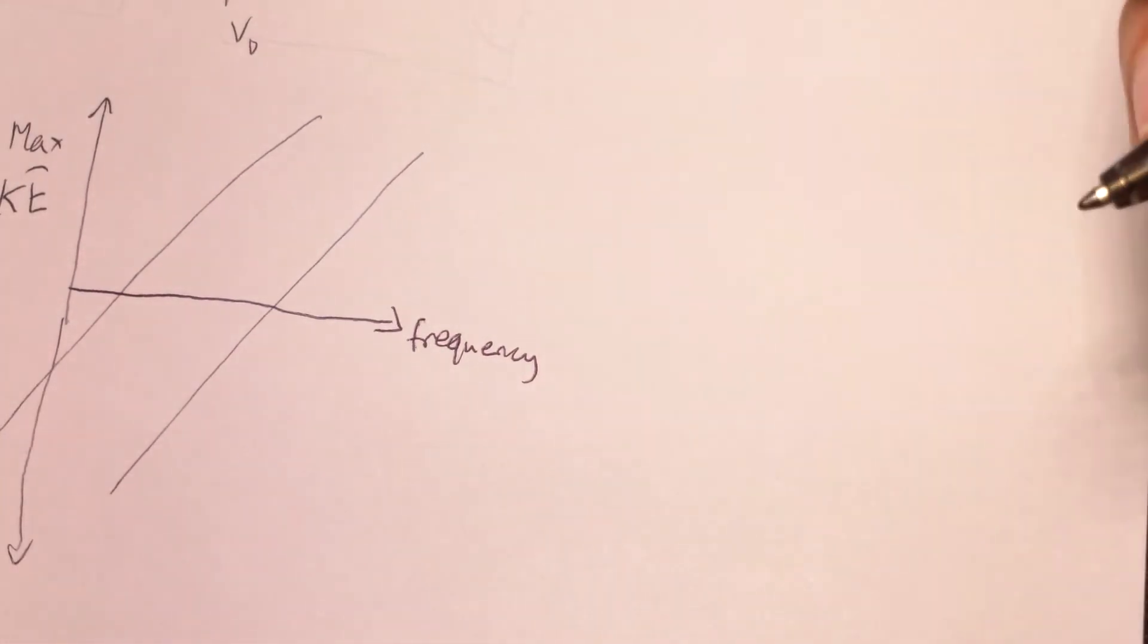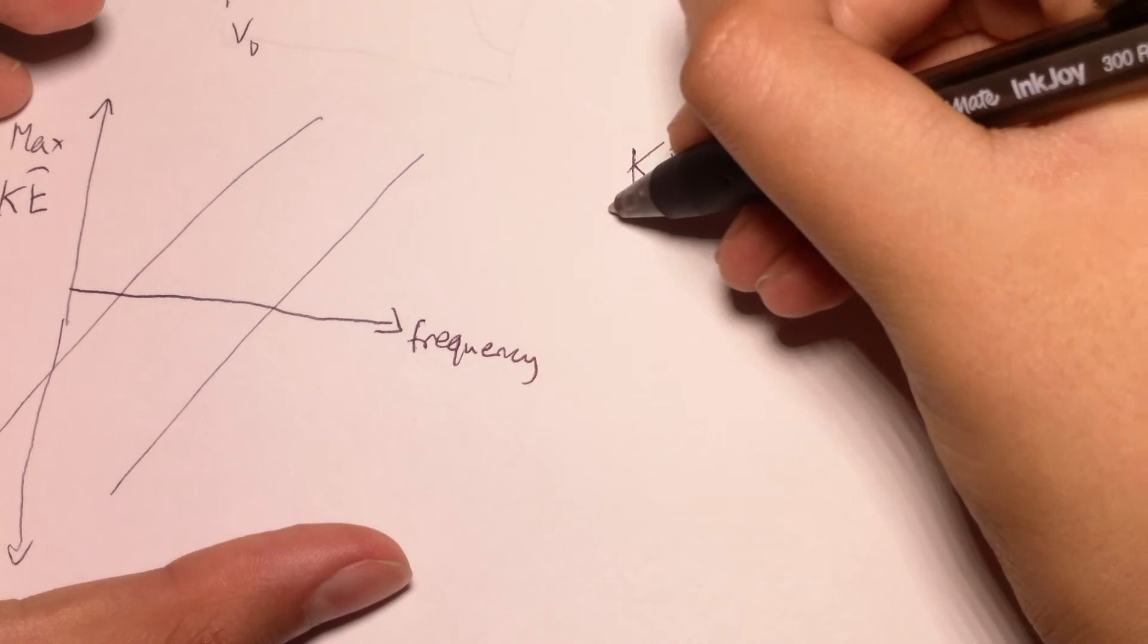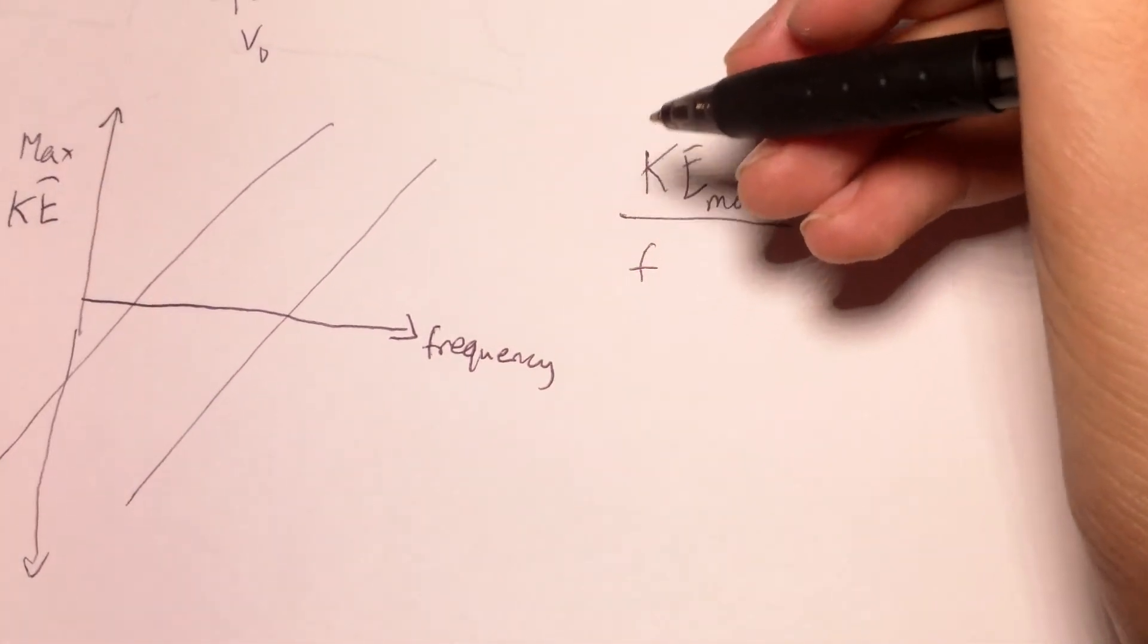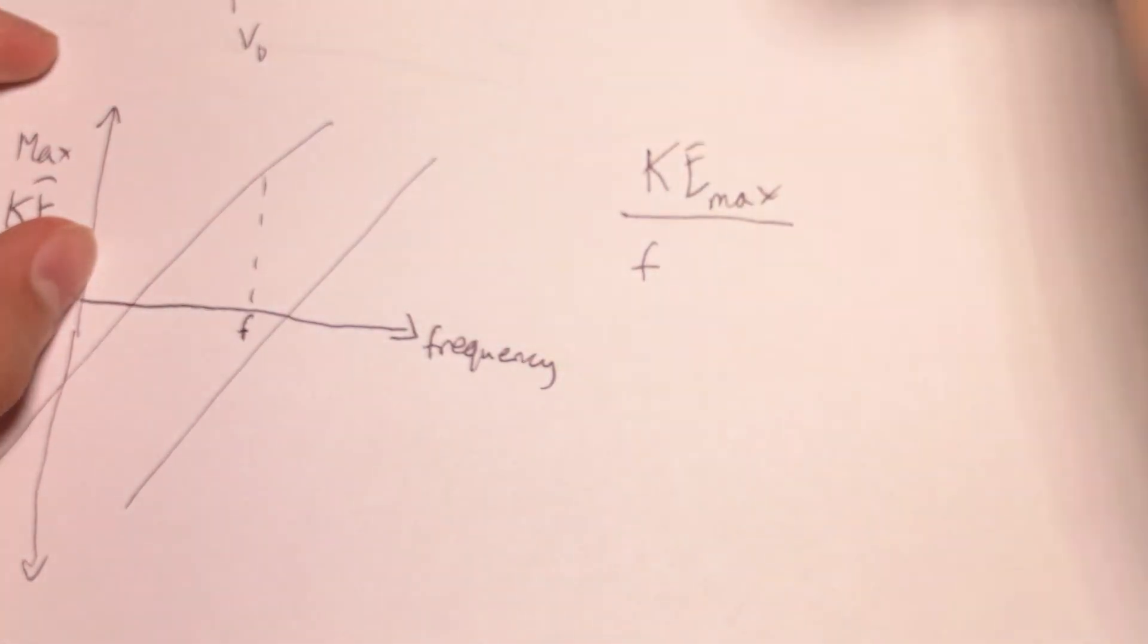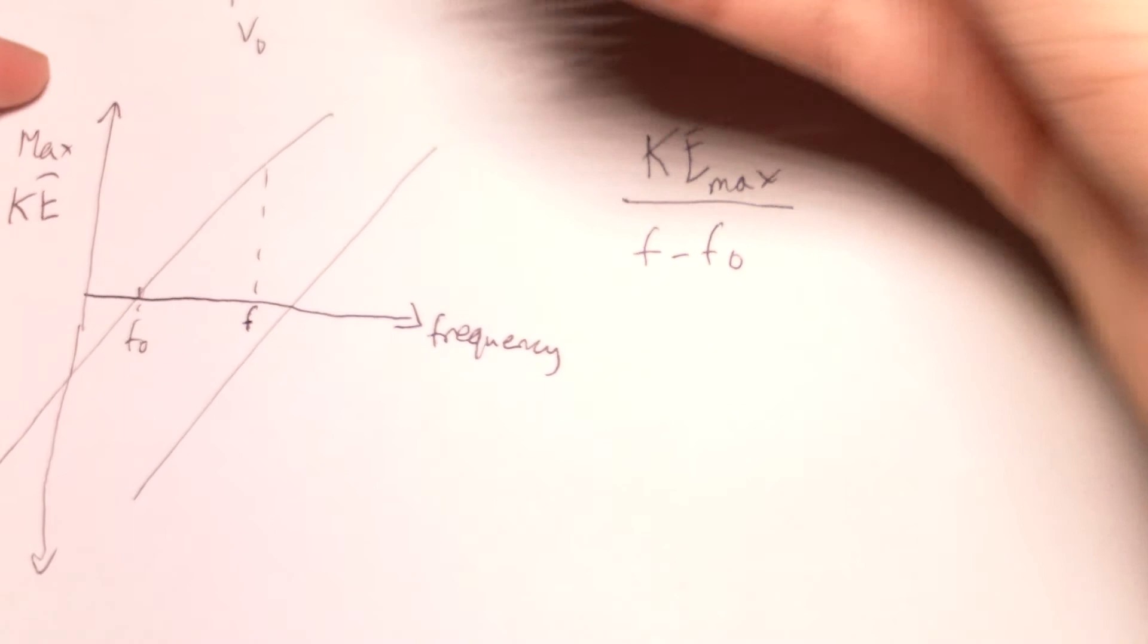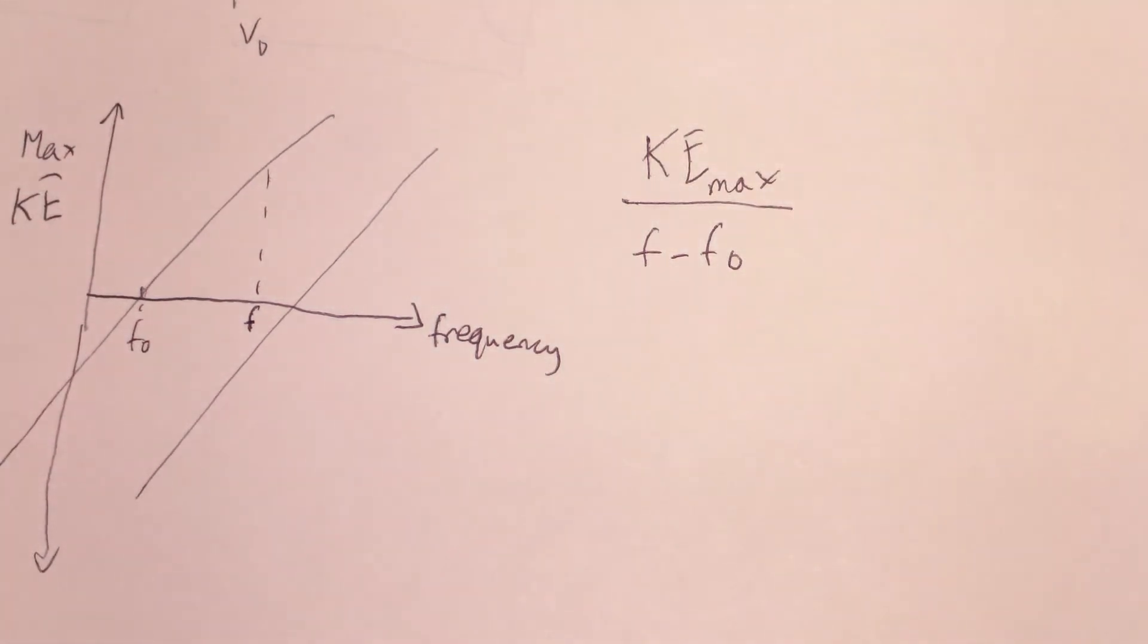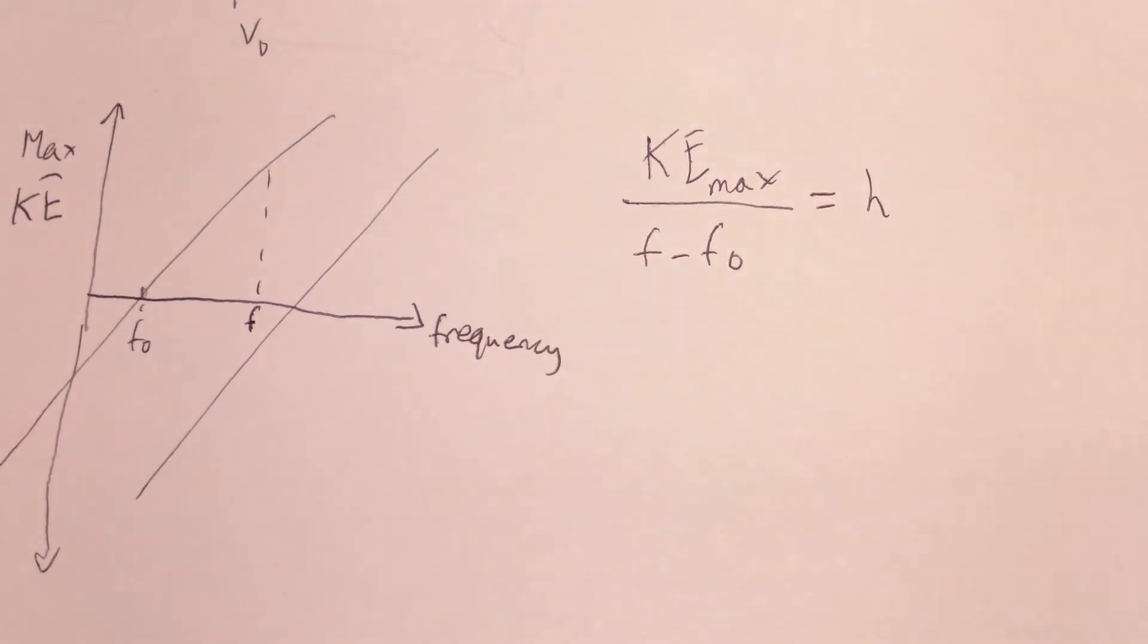And if you find the slope, we call it KE max over f, which is the frequency which we're talking about. So for example, we have some arbitrary frequency here, minus f0. And f0 would be the threshold frequency, the one where there's no kinetic energy, right? Because that is the very one which causes, which is the minimum amount of frequency which you need for the electrons to get knocked out. So this would be the slope, right? You find that the slope equals Planck's constant.